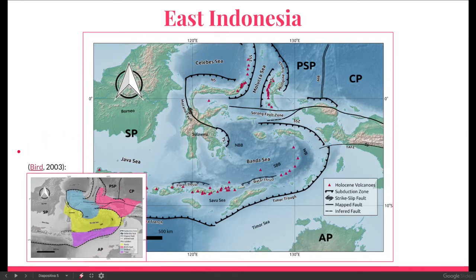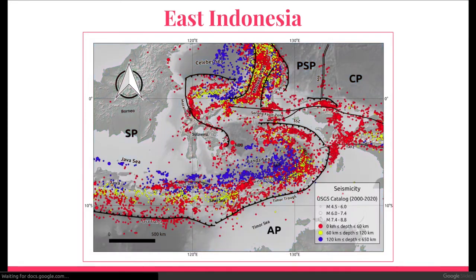If we're going to talk about tectonics in eastern Indonesia, we have to mention that there's a set of microplates that interact very complexly here. Looking again at the earthquakes, we can see that the Timor Trench also marks how subduction continues here. It has been debated whether the Australian Plate actually subducts underneath the Banda Sea region, but at least if we look at the seismicity, it looks like it does.